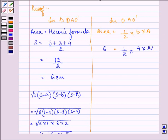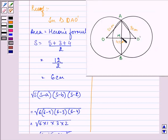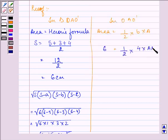That is 6 into 2 divided by 4 equal to AM. That is further equal to 3 centimeters.